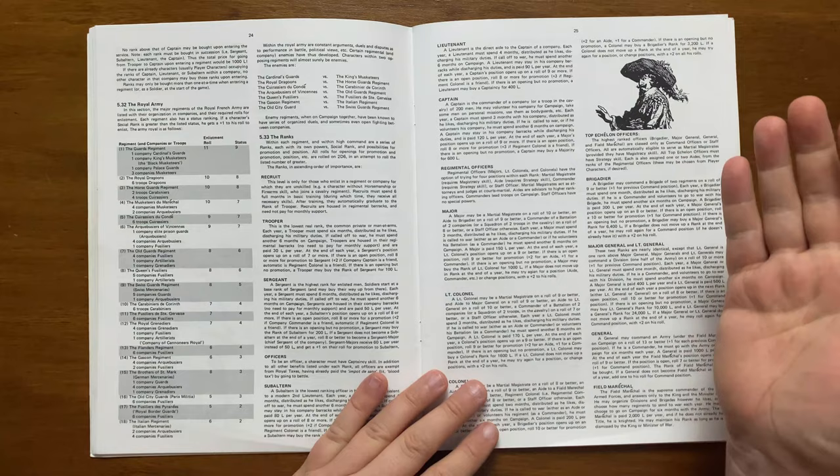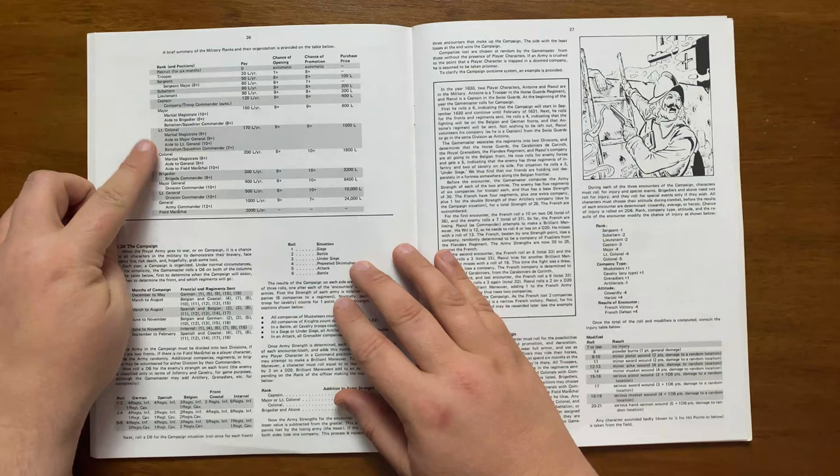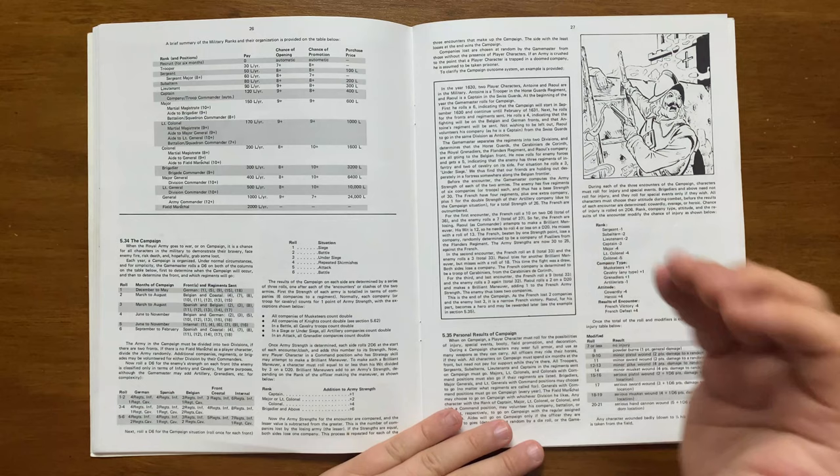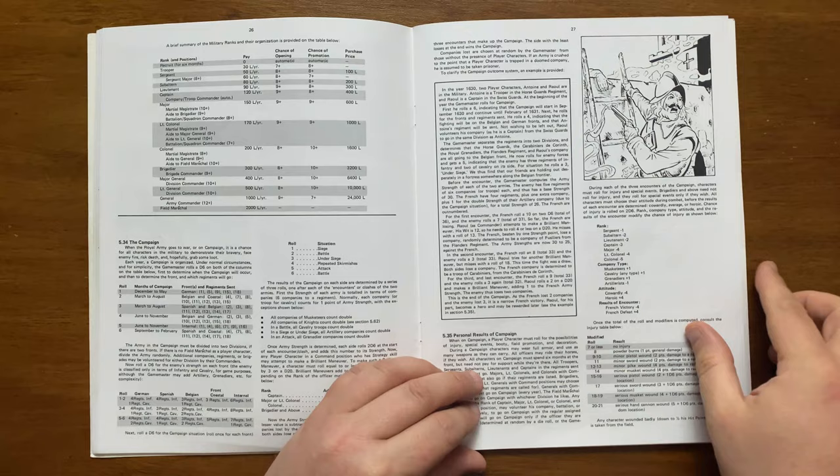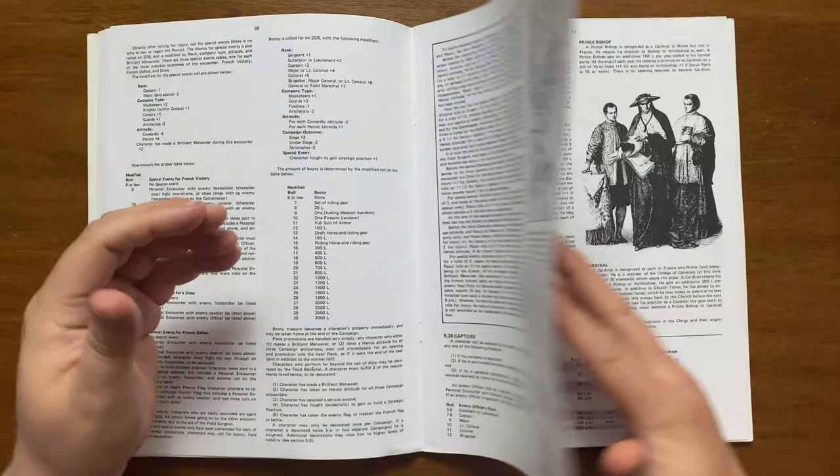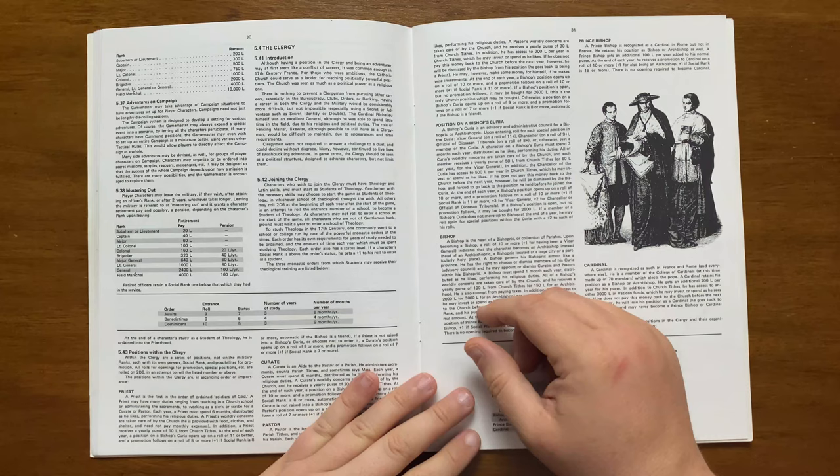It tells us the composition of the royal army and goes into each rank from recruit, right the way to field marechal, explaining the advantages, pay and reach of command. These are also detailed on this table here. It then moves onto generating a military campaign including the different situations, strength of army and personal results of the campaign including special events for victory, defeat and draw, booty and even capture which includes ransoms and even being pressed into the enemy army. It even touches upon running adventures during military campaigns and mustering out including the retirement and pension they could receive.